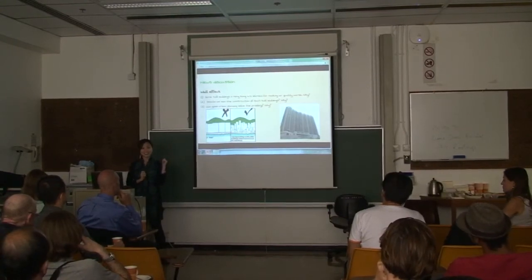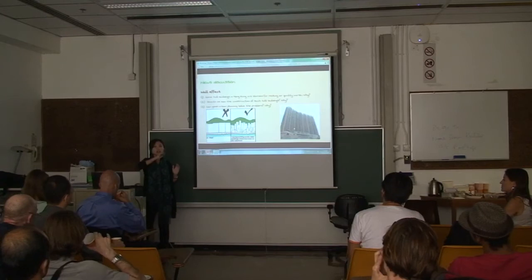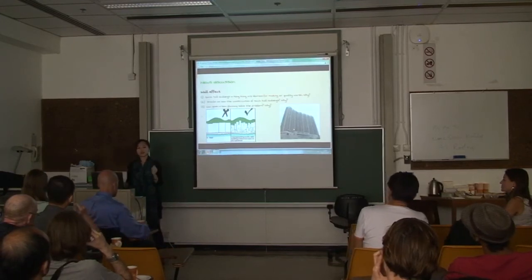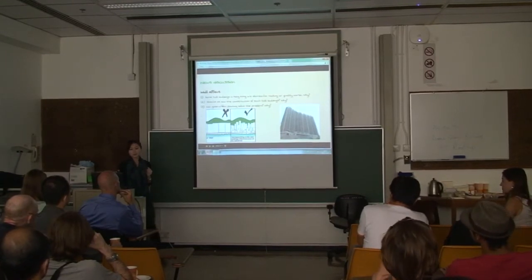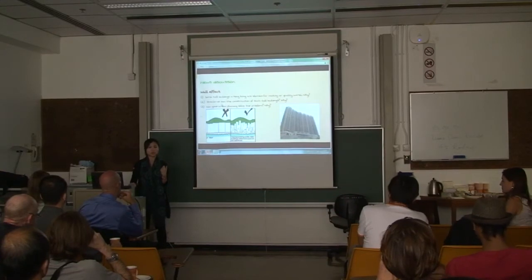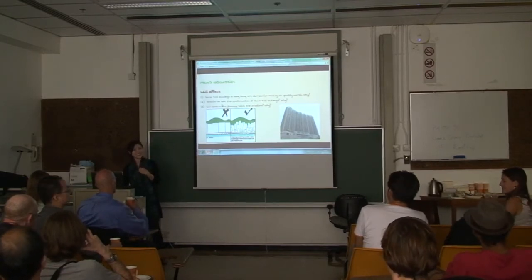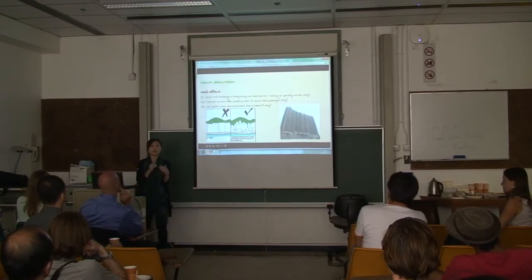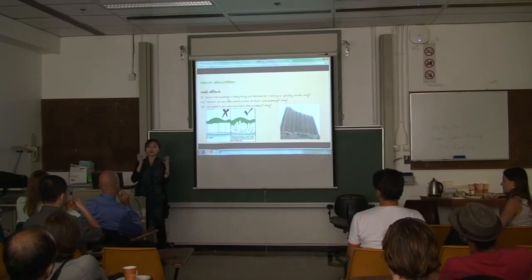We can also have news discussion about topics unique to Hong Kong, for example the 'wall effect.' In Hong Kong we don't have enough land for residential use, so buildings are built taller and taller, which may block air pollutants within a specific area and worsen air pollution. You can ask students: should we ban all construction of tall buildings? Students can understand that there is no absolute answer, but we can learn to find a balance between development and protecting the environment.